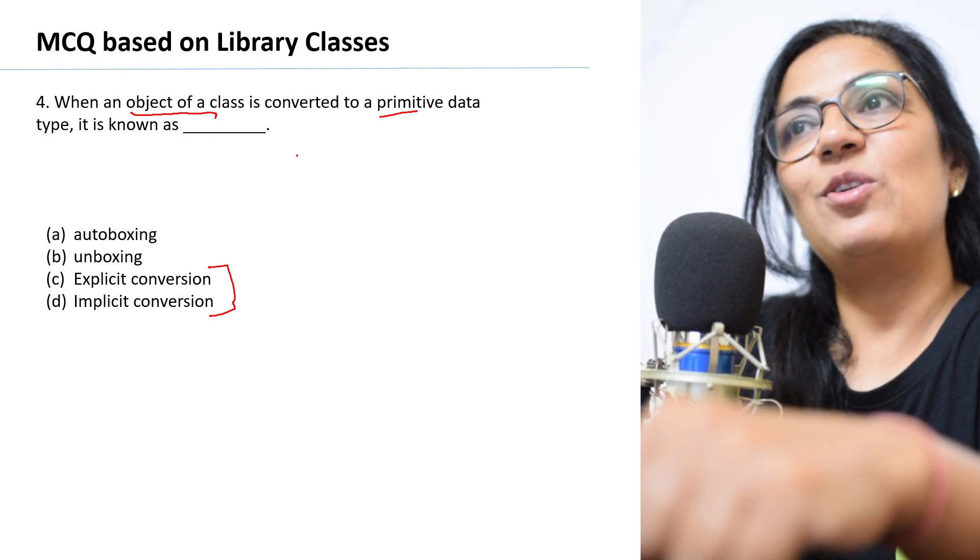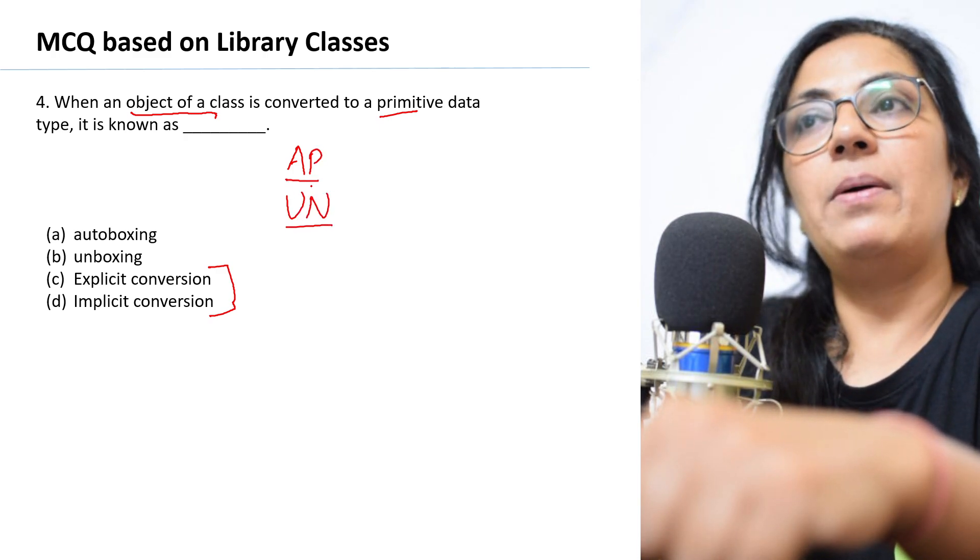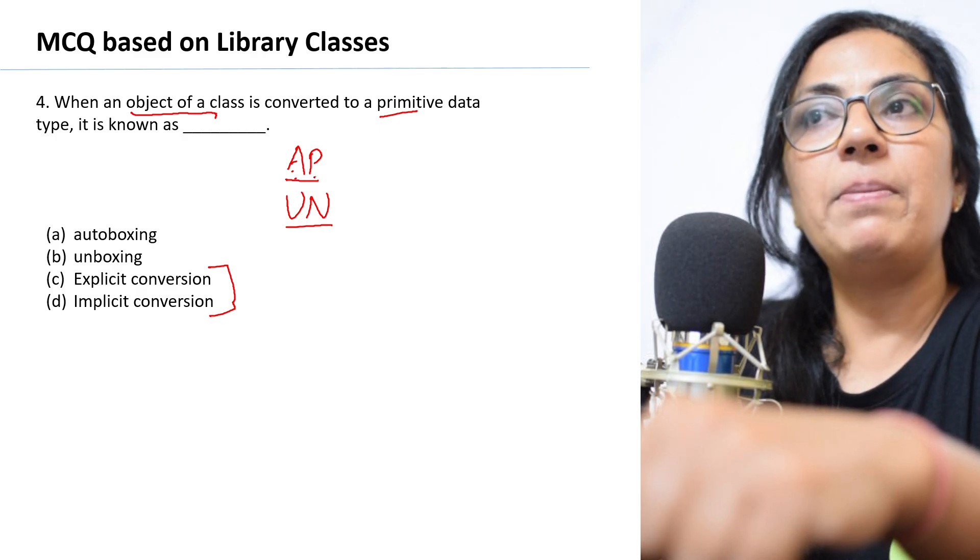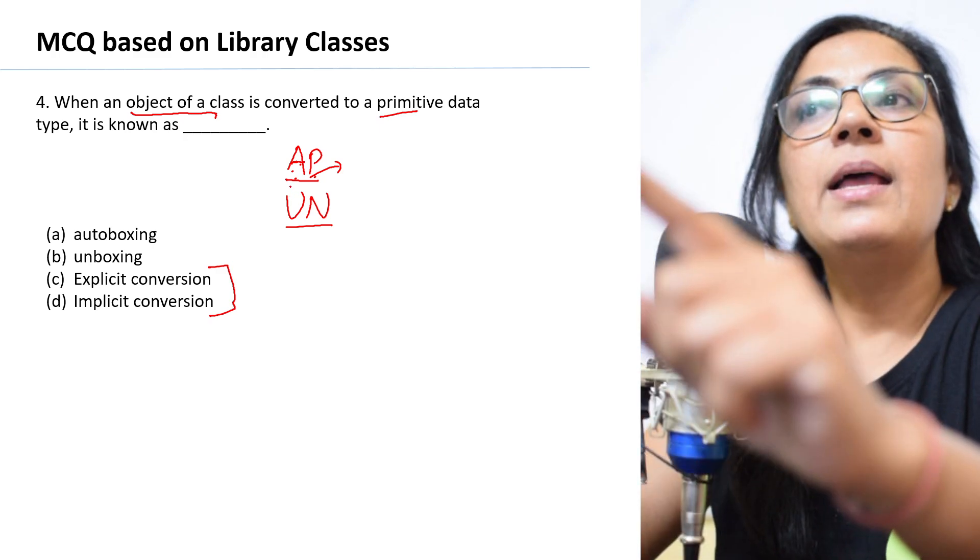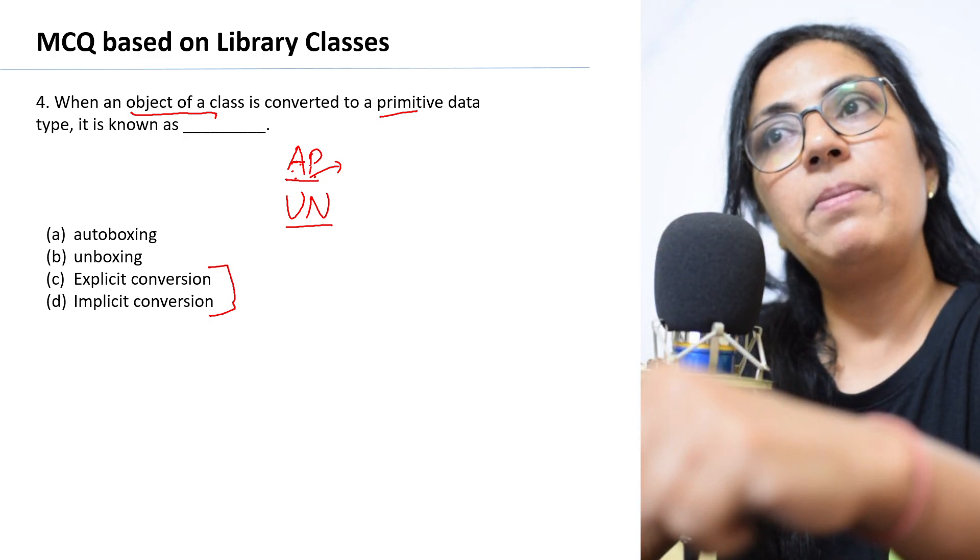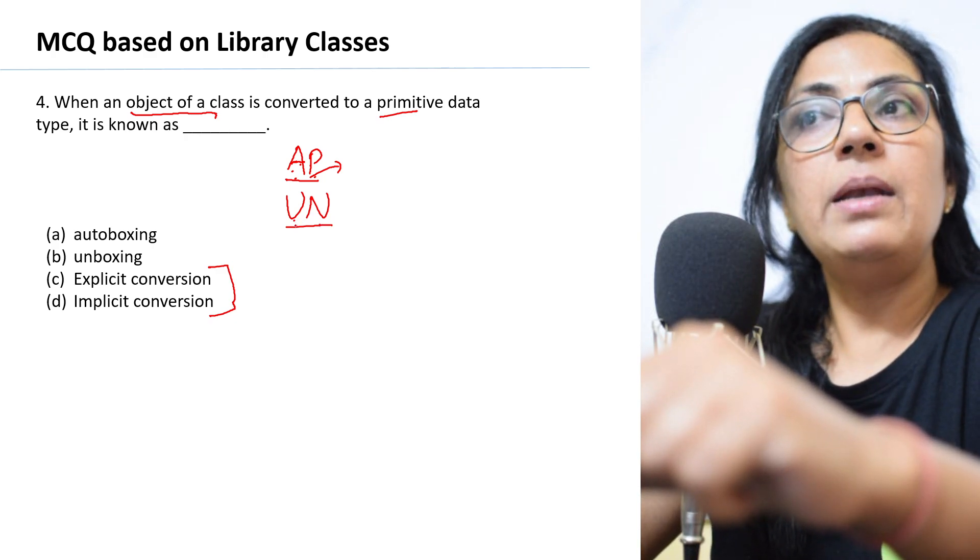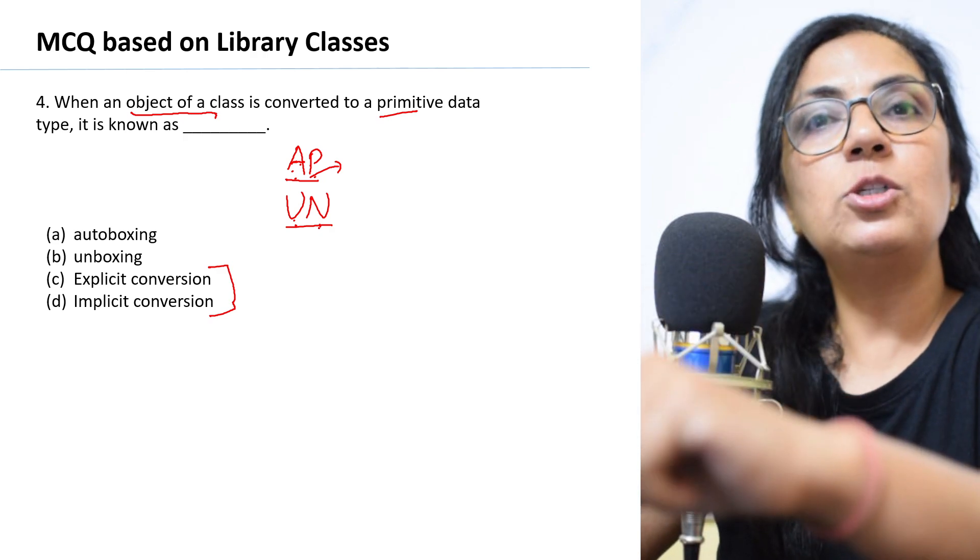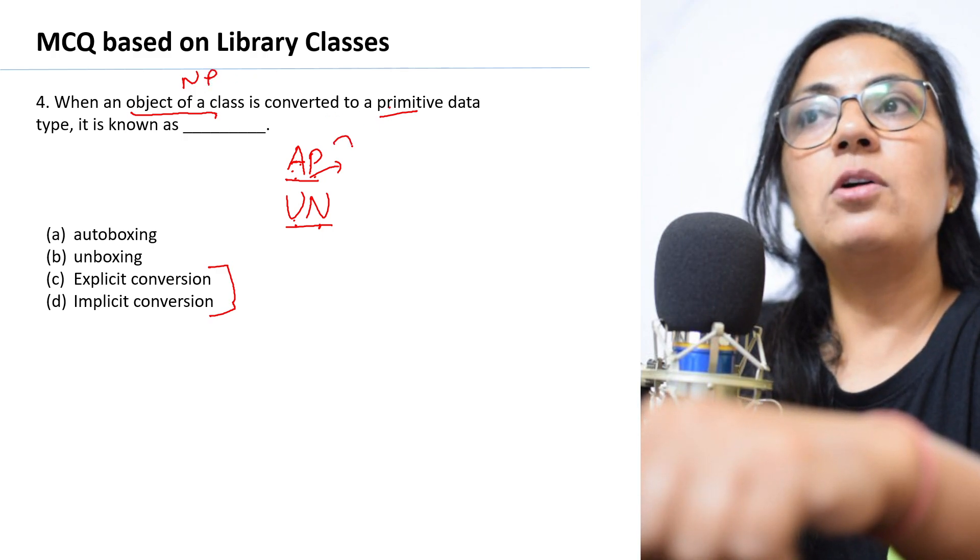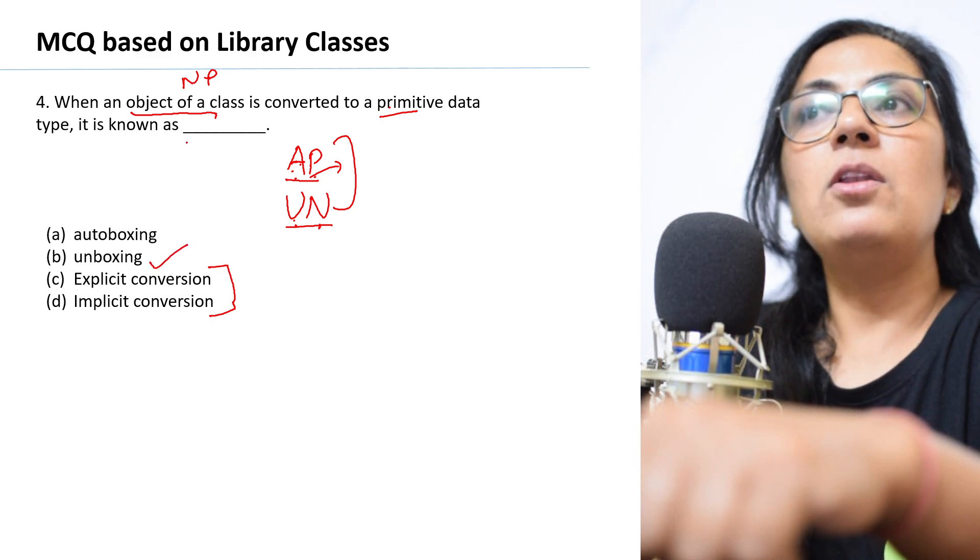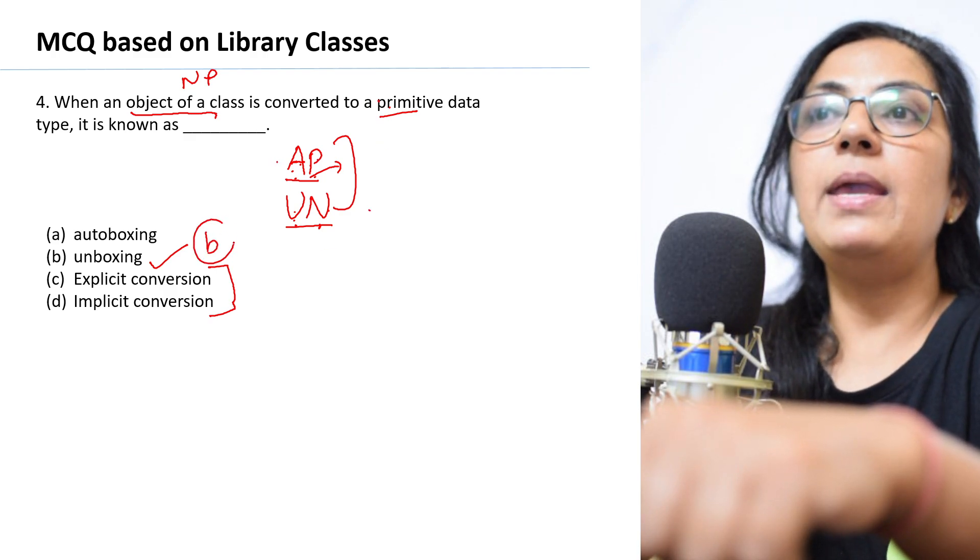Before I tell you the answer, let me tell you one shortcut method to remember this. A, P and UN. A stands for autoboxing, P stands for primitive. So the process of autoboxing converts primitive to non-primitive. In autoboxing, primitive data type is converted to non-primitive. And UN: U stands for unboxing, N stands for non-primitive. So unboxing means non-primitive data type is converted to primitive data type. Object of a class is non-primitive, and we are converting to primitive. So out of this which one? Yes, unboxing. Non-primitive to primitive is unboxing. Autoboxing is primitive to non-primitive. Option B is the correct answer.